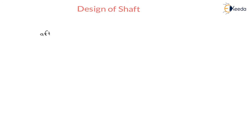When a shaft is subjected to torsion, it always has a circular cross section — either it may be a solid circle or it may be a hollow circle. Therefore, in the design of shaft subjected to combined bending and twisting moment, the cross section of the shaft is circular, either solid or hollow.